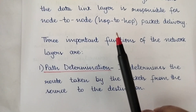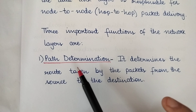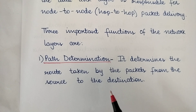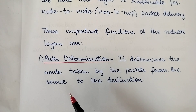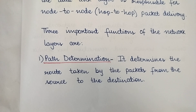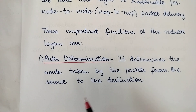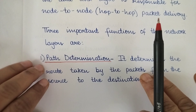Three important functions of the network layer: the first is path determination. The network layer determines the route taken by packets from the source to the destination. Since there are various routes available in a network, we must choose the best available path based on various factors. It is the responsibility of the network layer to find the optimal route for packet delivery from source to destination.